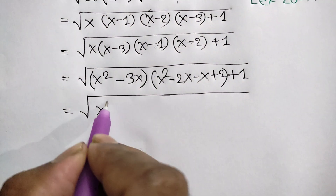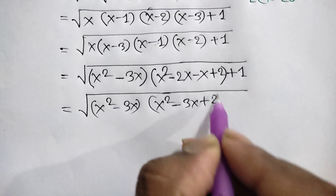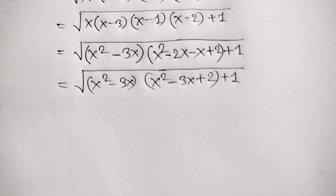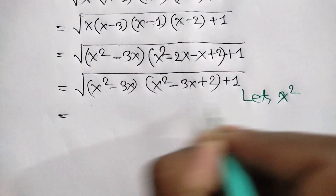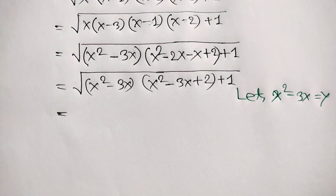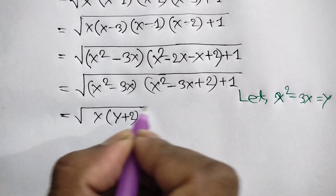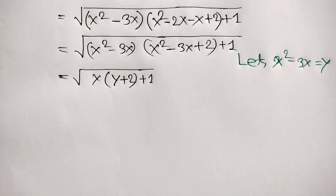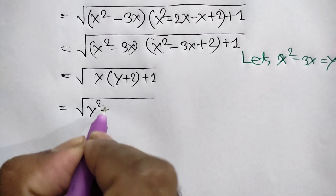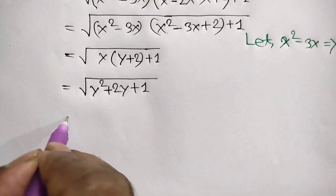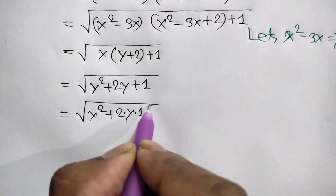This equals the square root of (x squared minus 3x) times (x squared minus 3x plus 2) plus 1. Now let y equal x squared minus 3x. We can write: square root of y times (y plus 2) plus 1, which is square root of y squared plus 2y plus 1.